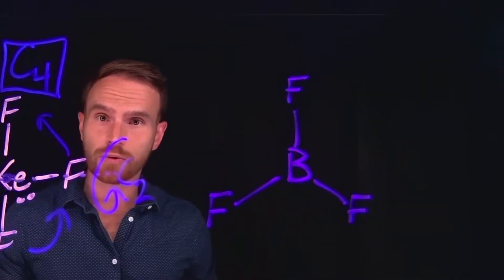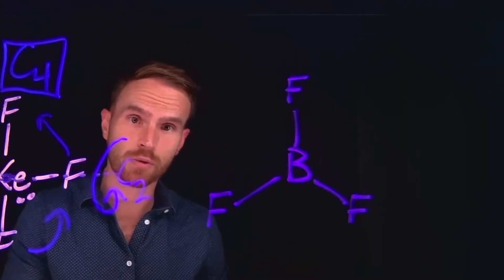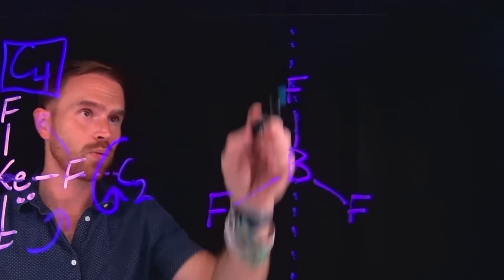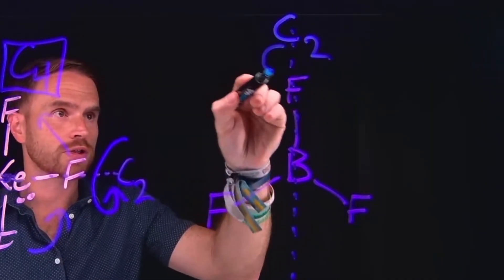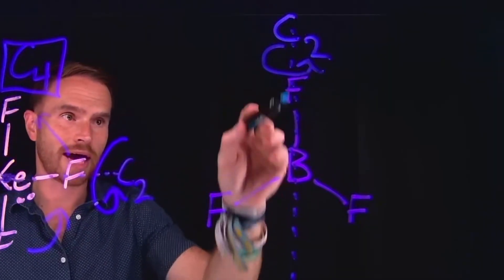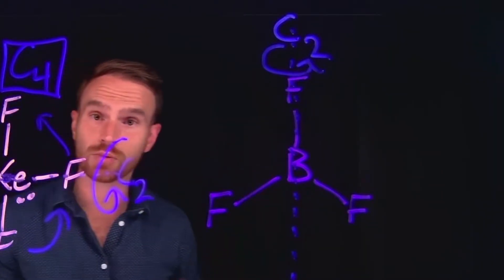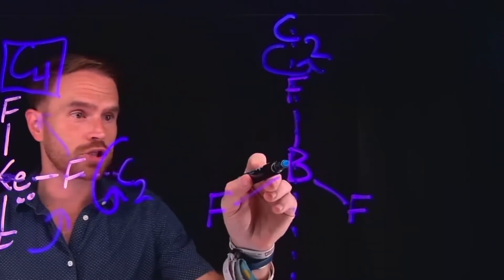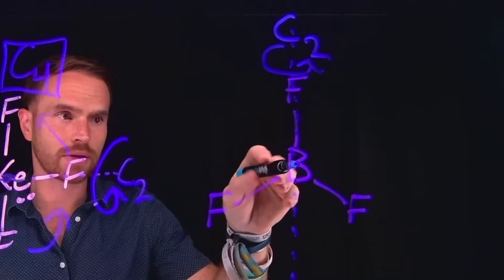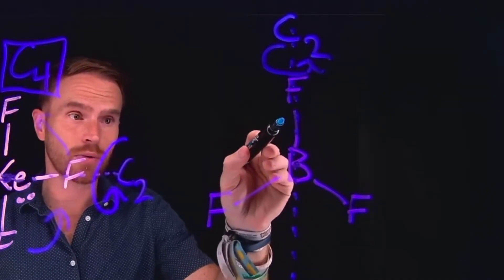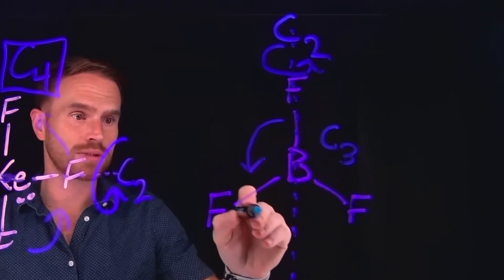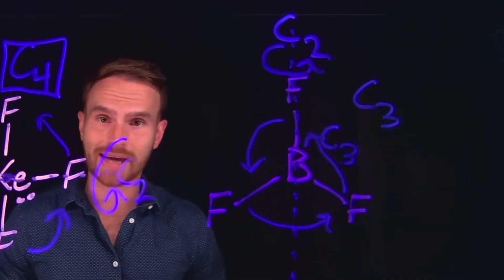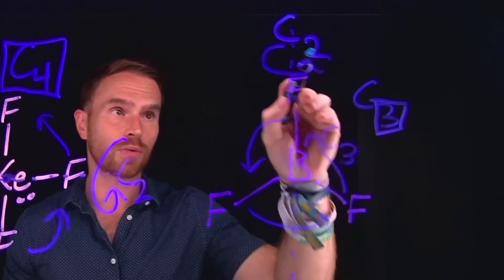BF3 is another example where there are multiple rotation axes and identifying the principal rotation axis is important. Going through a fluorine-to-boron bond, we can identify a C2 rotation axis — rotating 180 degrees leaves the molecule looking the same because two fluorines flip-flop. However, perpendicular to that, going directly through the center of the boron atom, there is a 120-degree rotation, giving us a C3 rotation axis. Therefore, C3 is the principal rotation axis because 3 is greater than 2.